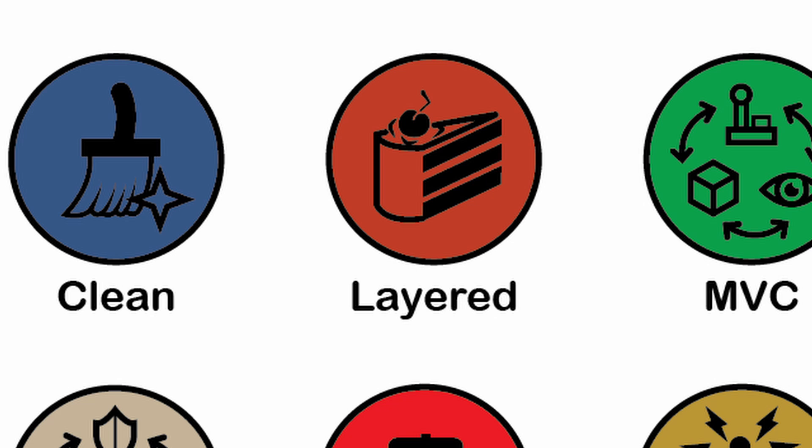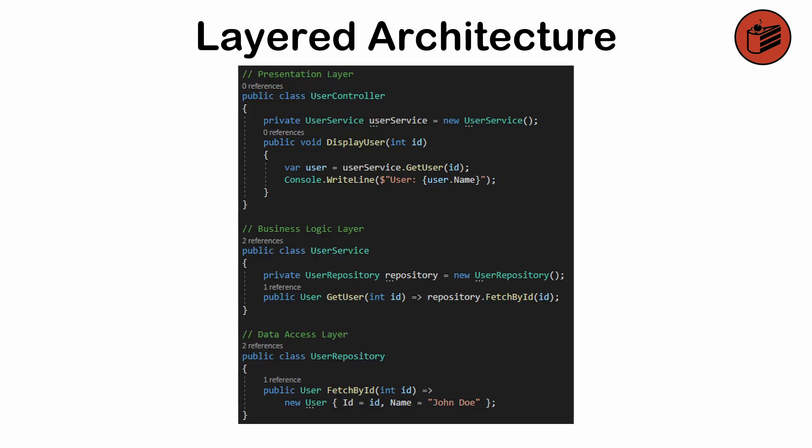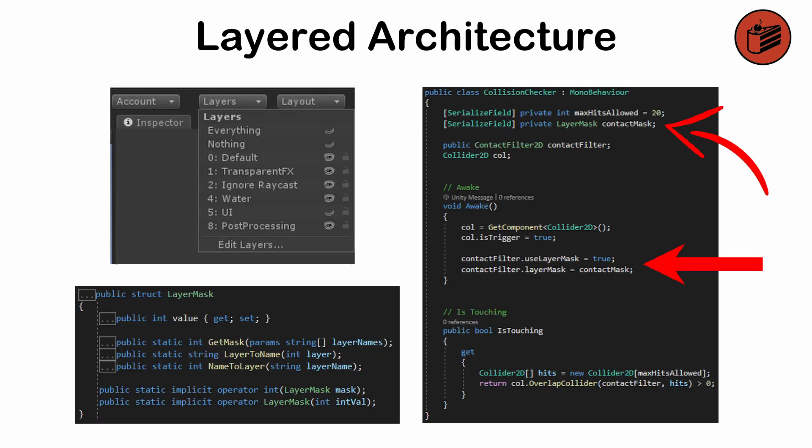Layered or N-tier architecture. A way to divide a system into layers, each responsible for specific functionality, such as presentation, logic, and data access. This pattern is ideal for enforcing separation of concerns, but can lead to inefficiencies and tight coupling between layers if poorly designed.